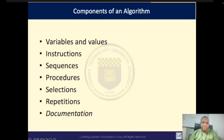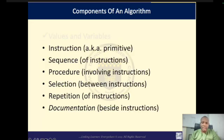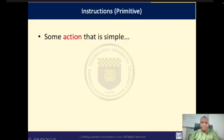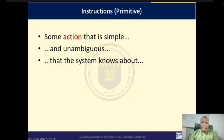The various components of an algorithm are: variables and values, instructions, sequence, procedures, selection, repetition, and documentation. When we talk about instructions, we are talking about simple actions that are unambiguous — they should not confuse the compiler. Instructions should be ones that the system knows about and can actually do. You do not give instructions that the system cannot do. For instance, if you tell the compiler to carry a table, how do you expect it to? But if you tell it to add two numbers, it can do that.